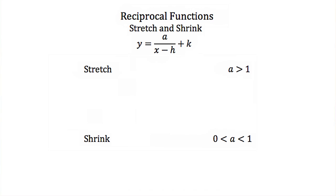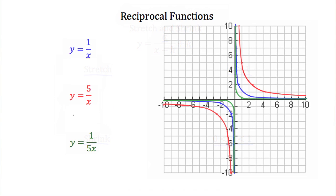Now let's investigate the effect that these constants have on the graph of our reciprocal function. The first constant we're going to investigate is a. If our a is greater than 1, we're going to stretch the graph of our reciprocal function. If our a is between 0 and 1, then we're going to shrink the graph of our reciprocal function. Here we're given the graph of several reciprocal functions with different a values, and we're going to compare these functions to our parent function, y is equal to 1 over x.